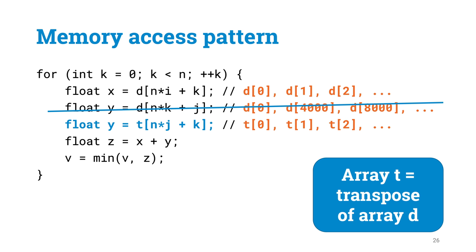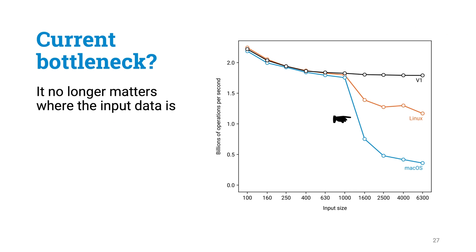Here the blue and the orange curve are what we already saw for the previous version, while the black curve is the performance of the new version, where we simply replaced reading of d by reading of the transpose of d.